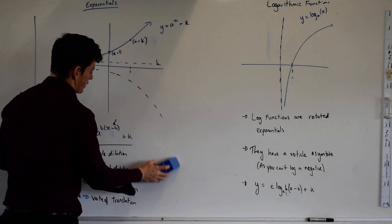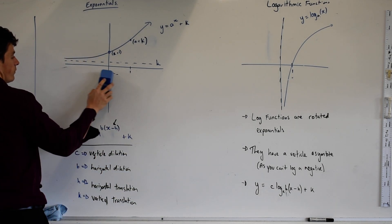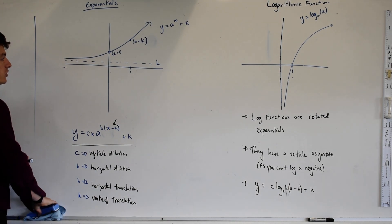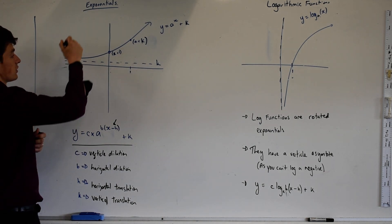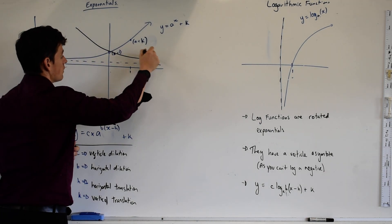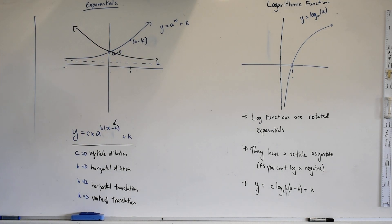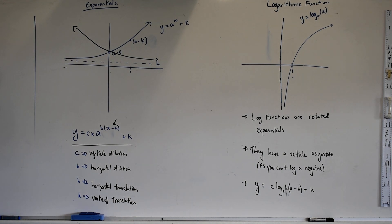If our b value is negative, what do you think that's going to do? It's going to turn it. So instead of it being, we're going to flip it around this axis, so I'll do this instead. So that's what a negative b value does, which is essentially turning into an exponential decay.